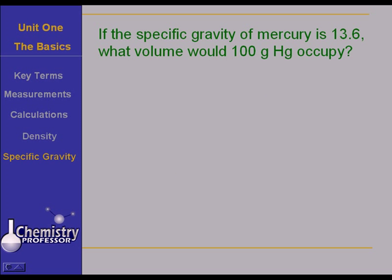Let's try this problem. If the specific gravity of mercury is 13.6, what volume would 100 grams of mercury occupy? I trust you know that mercury is a liquid. And do you understand that 13.6 means that the density of mercury is 13.6 times that of water?